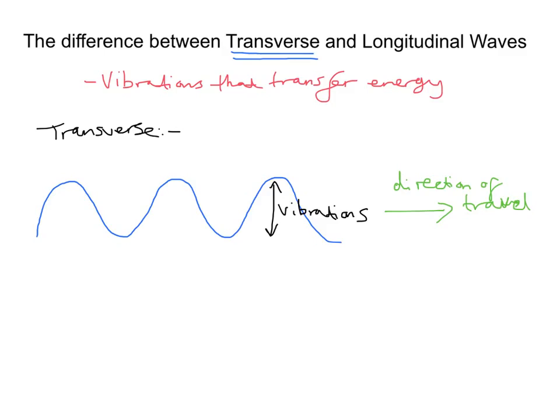Now, light and other electromagnetic radiation are transverse waves. So when you think of the electromagnetic spectrum, we've got light, UV, infrared, gamma. They all travel as transverse waves. In fact, water waves and S waves, which is a type of seismic wave, also are transverse waves.